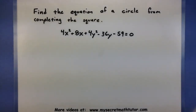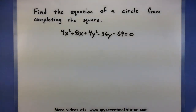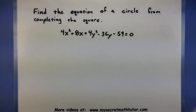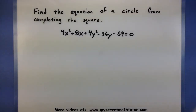In this video we're going to take a look at the process of using completing the square to find the equation of a circle. Looking at the example below, I basically have the equation of a circle, but unfortunately it's really difficult to figure out where the center is and what the radius is, because everything has not been factored out yet. We'll use the process of completing the square to factor things out and then we'll easily be able to identify where that center and radius is.